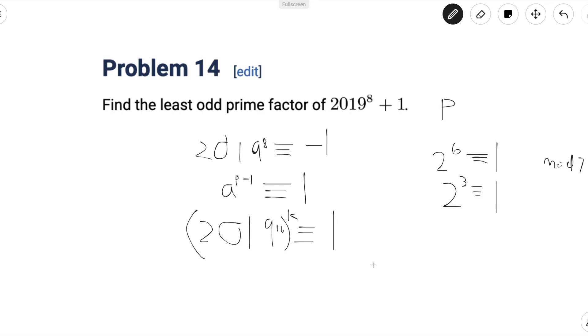But we also have to be careful because 2019 to the 16 might be congruent to 1, but 2019 to the 8 might not be congruent to negative 1. And we can see this in this example with 2 to the 6 is congruent to 1, but 2 cubed is also congruent to 1, not negative 1. So we have to keep that in mind as we check each value of k.